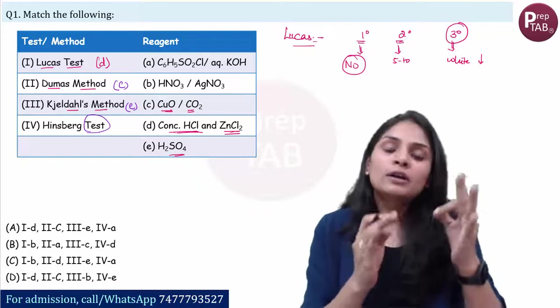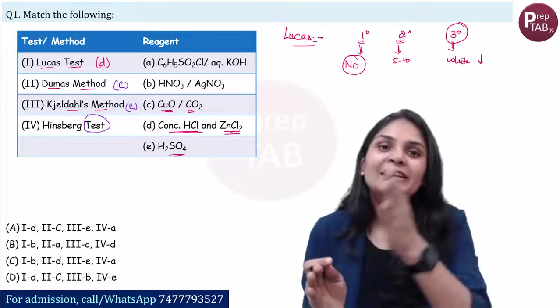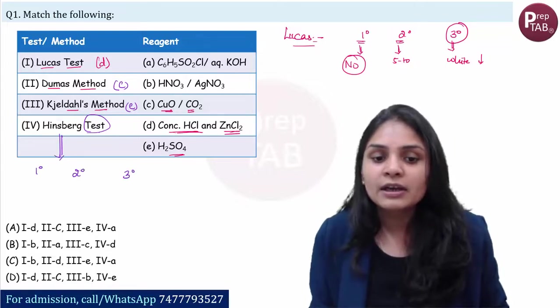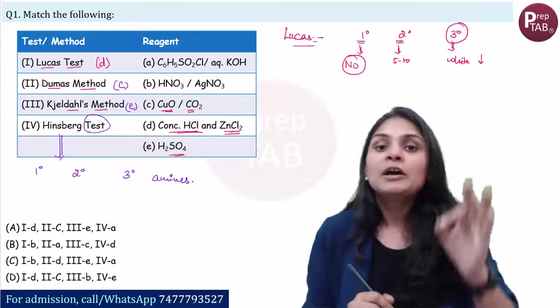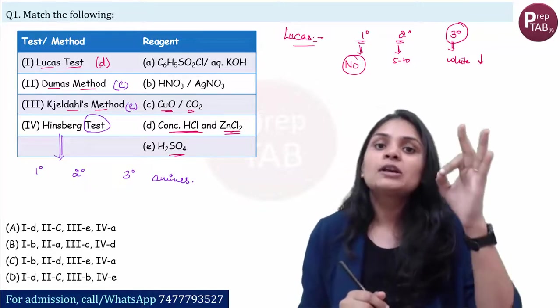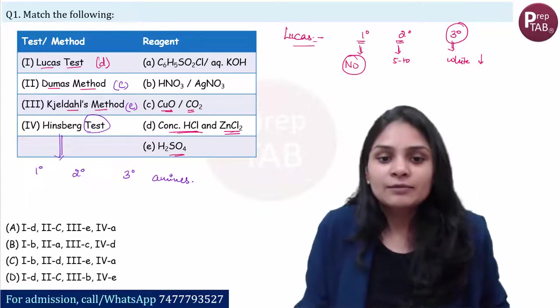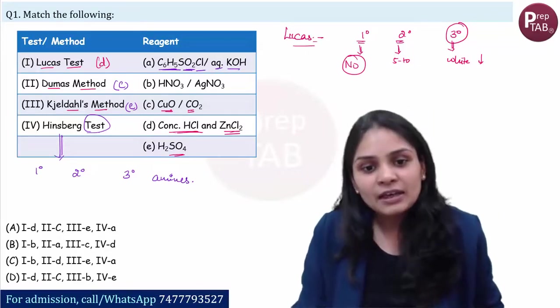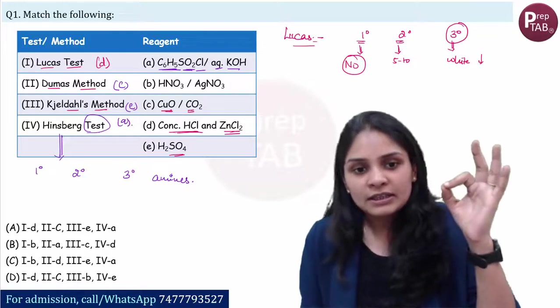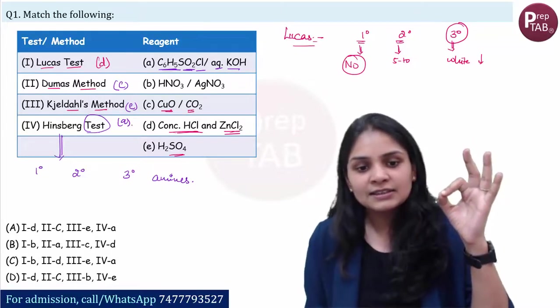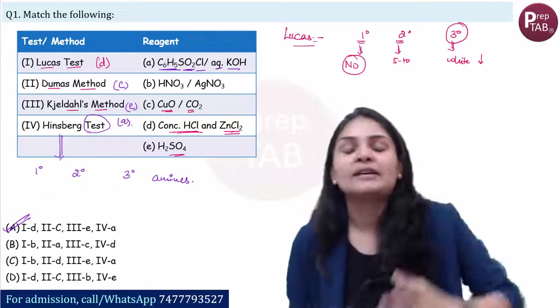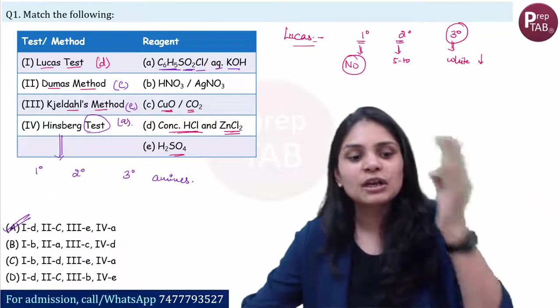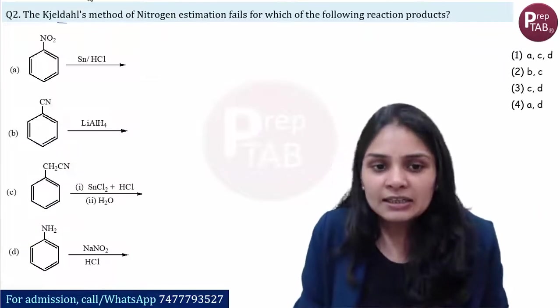For Duma's method C is correct and for Kjeldahl's method E is the right option. Hinsberg test is for distinguishing 1 degree, 2 degree, and 3 degree amines, and we use sulfonyl chloride which is C6H5SO2Cl in basic medium, so this answer is D. That means option A is the right one, right. So this is your first question.